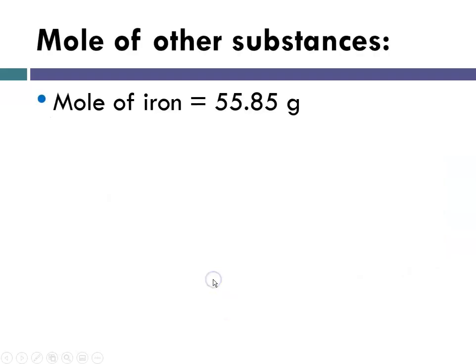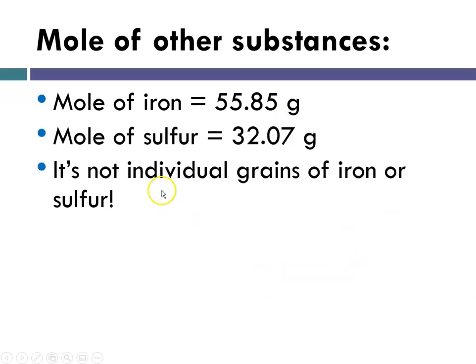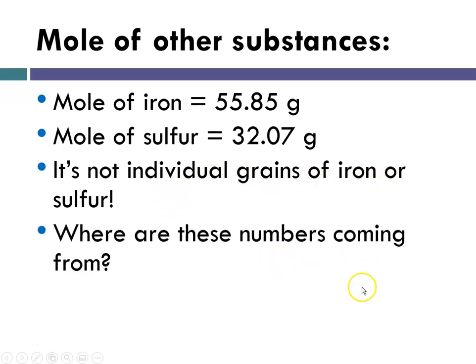Mole of other substances. A mole of iron is 55.85 grams. A mole of sulfur is 32.07. It's not just individual grains of iron or sulfur. Where are these numbers coming from? So it turns out these numbers are coming from the periodic table. These numbers right here, I'm reading them off the periodic table.